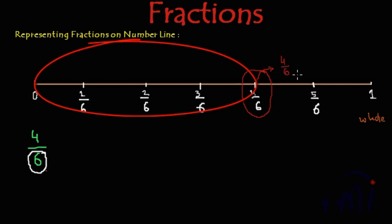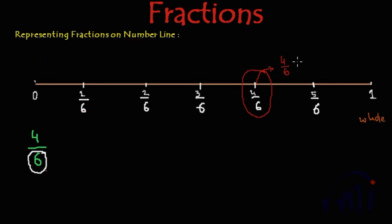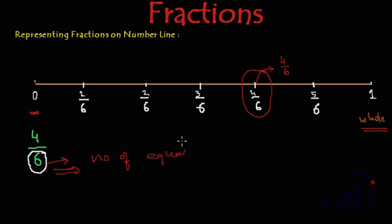This is the way we represent any fraction on the number line. The procedure is: first you draw a line, then label the starting point as 0 and the last point as a whole. Then you see the denominator of the fraction and divide the number line into equal parts as the denominator indicates. Since the denominator was 6, we divided into 6 equal parts. The numerator positions can be marked sequentially as 1, 2, 3, 4, 5, 6 and so on. The denominator represents the number of equal parts. So we have learned how to represent a fraction on the number line.